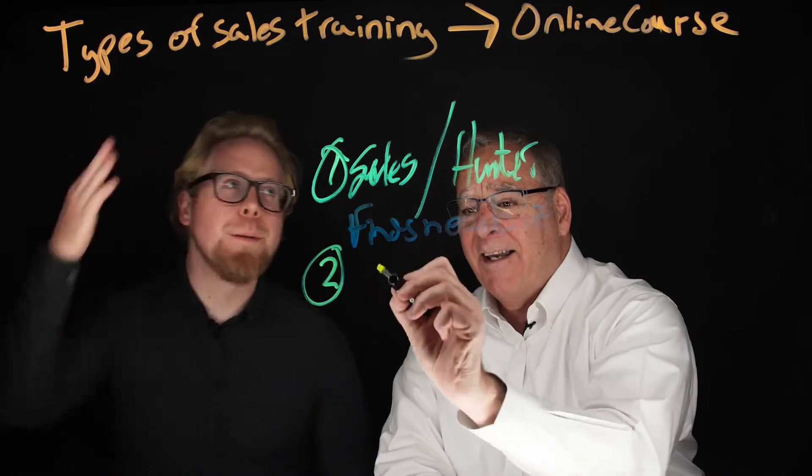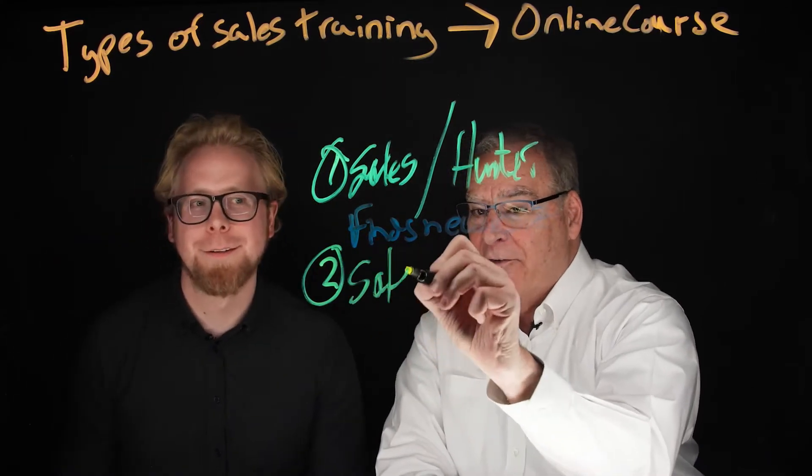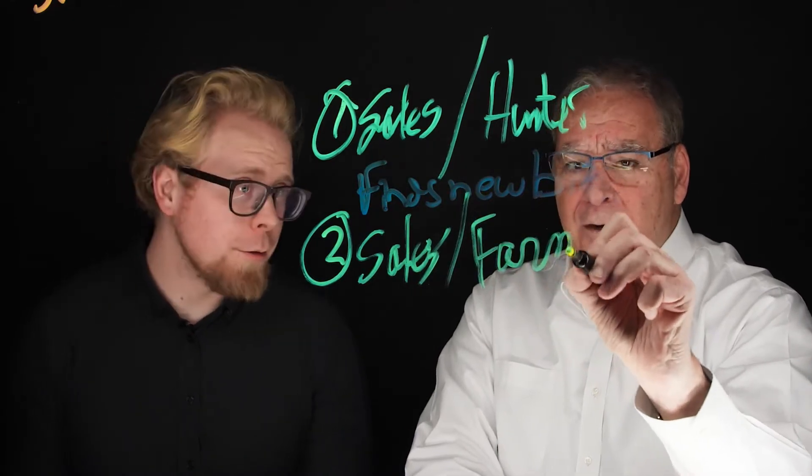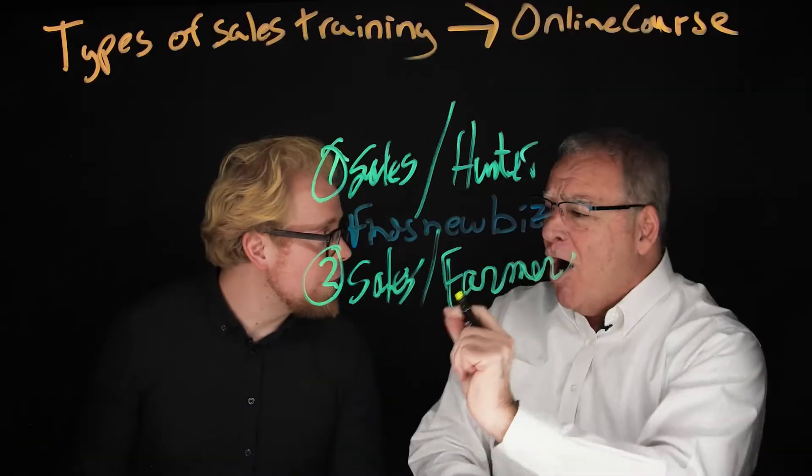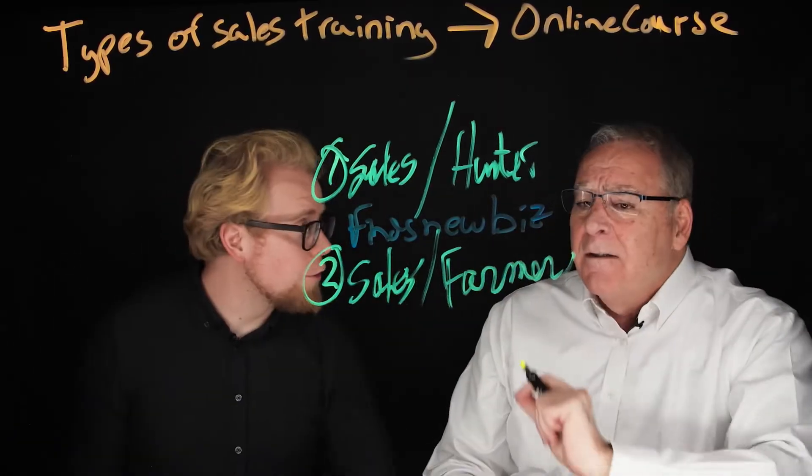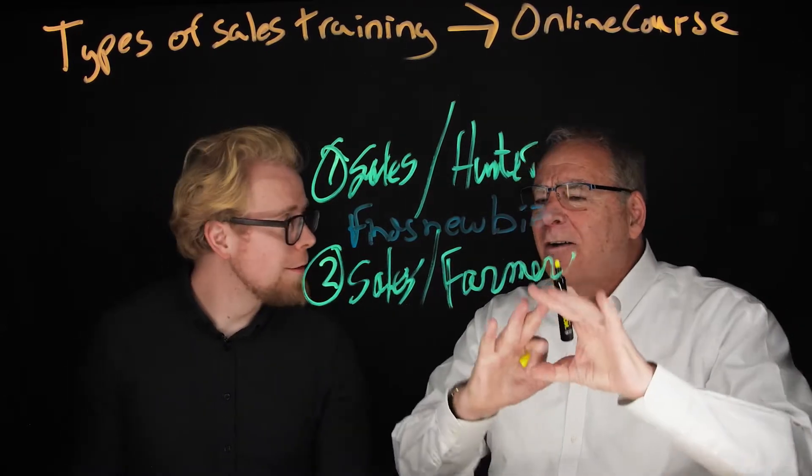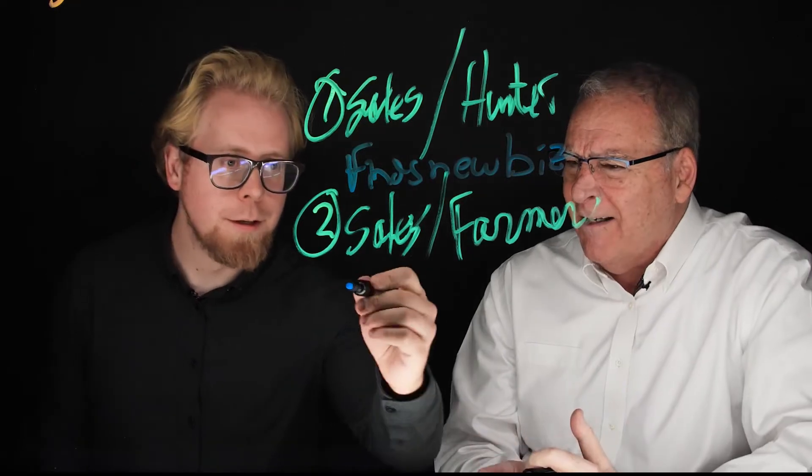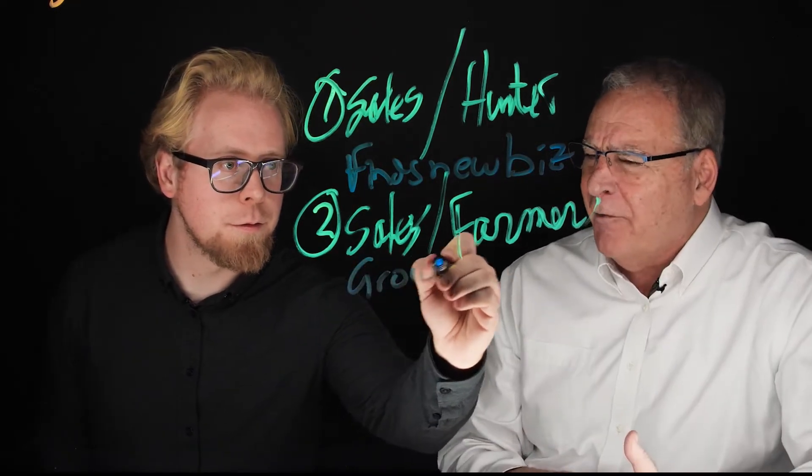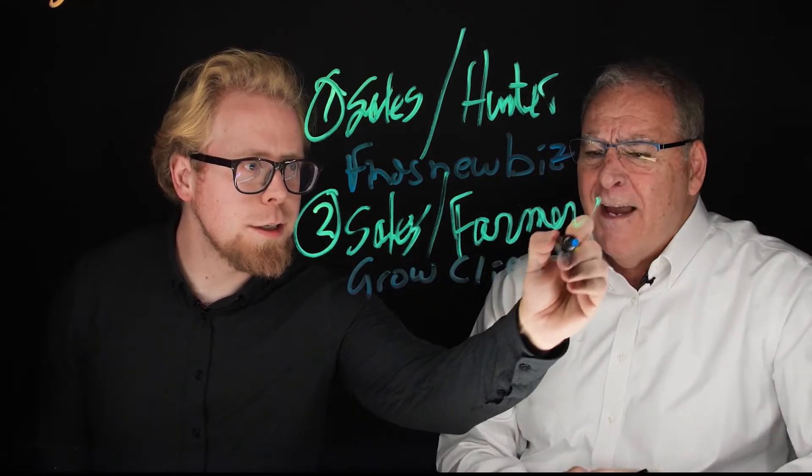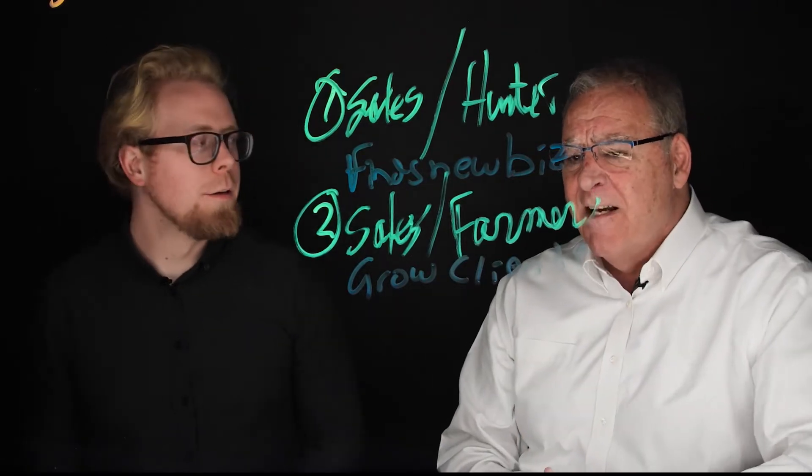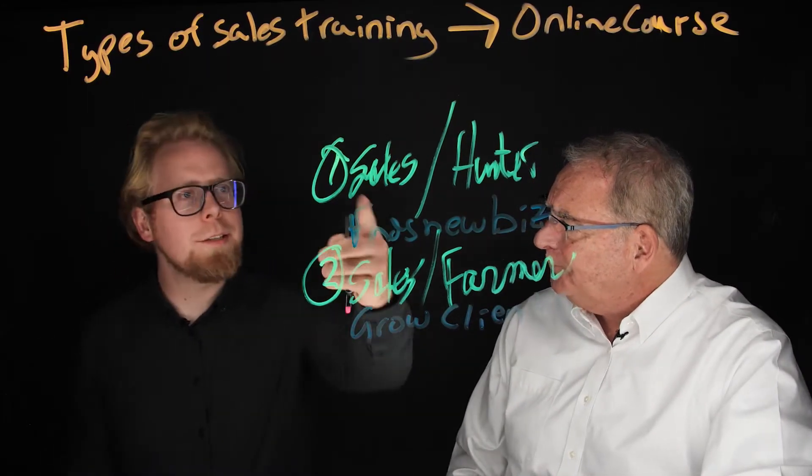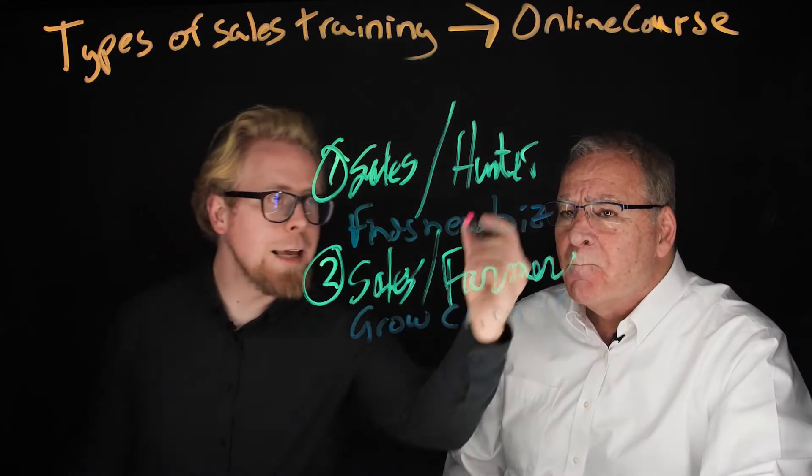The second type of sales you can build into an online course: we call these folks farmers. These farmers are more conservative, the long-term people. They handle your clients and grow each of those clients' opportunities within your organization. This is nurturing. They're consultants who grow relationships.